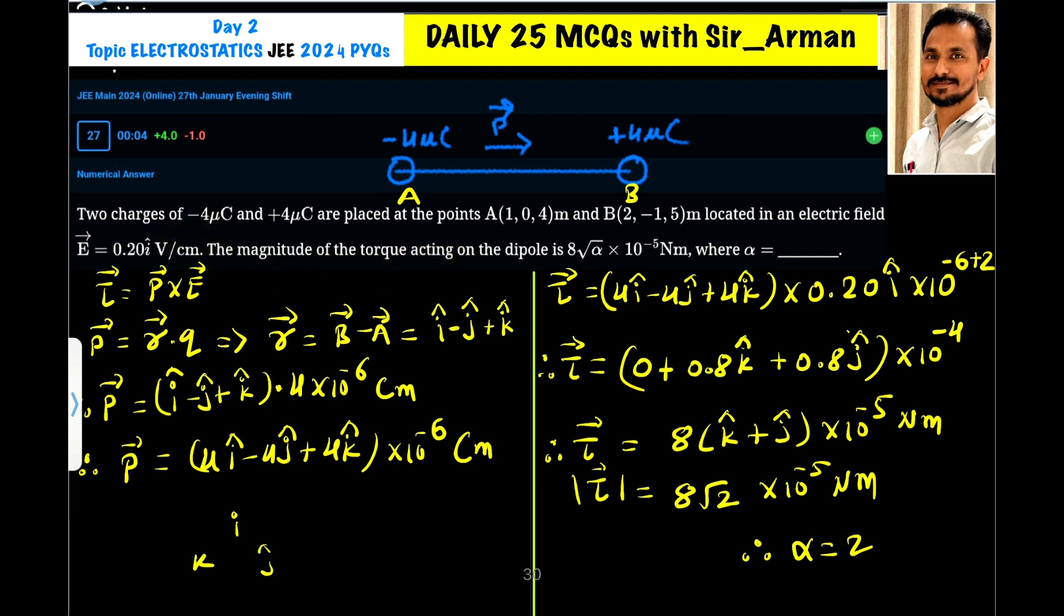If you convert it into meters, we will get 20 volts per meter. Now we know that the magnitude of the torque acting on the dipole is 8 under root alpha into 10 raised to minus 5 newton meter, means we have to find the value of alpha.